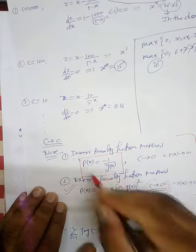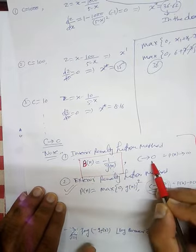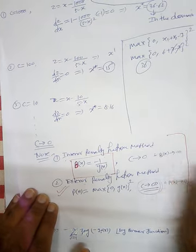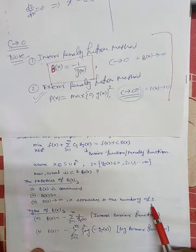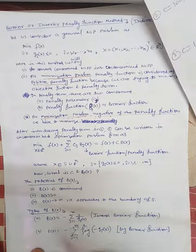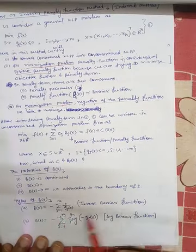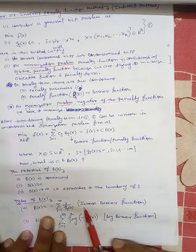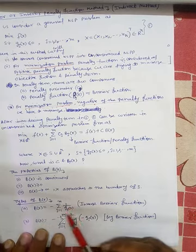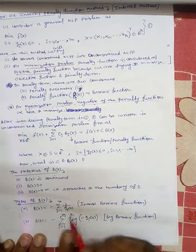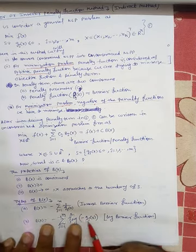b(x) ≥ 0 and b(x) tends to infinity as x approaches the boundary of S. Now the types of b(x): there are two types. The first is b(x) = −summation of 1/g_j(x), known as the inverse barrier function. The second is b(x) = −summation of log(−g_j(x)), known as the log barrier function.